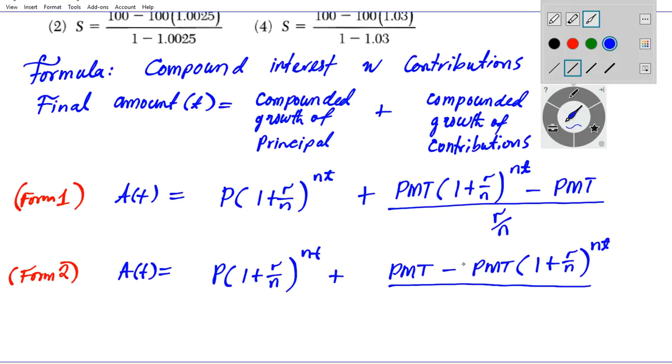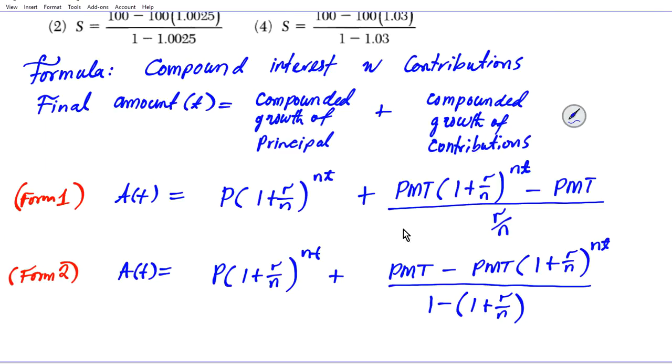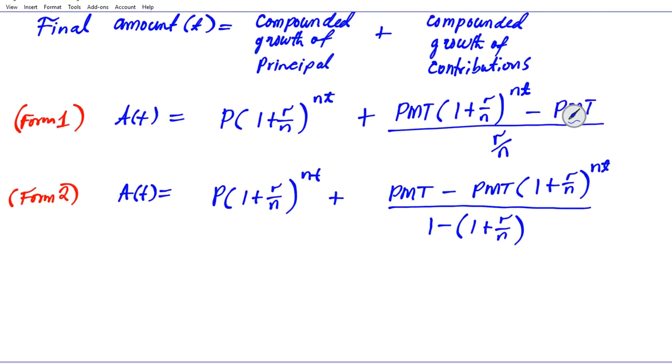Notice we switch the order of the difference in the numerator. Anytime you switch the order, you introduce a negative. So in the denominator we have 1 - (1 + r/n). These two formulas are exactly the same thing. We're using Form 2 to solve this problem.